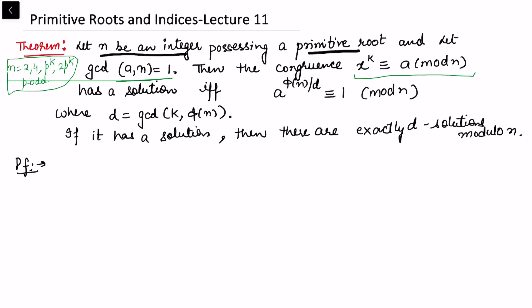Then the congruence x^k ≡ a (mod n) has a solution if and only if a^(φ(n)/d) ≡ 1 (mod n) is satisfied. This condition is if and only if, giving us necessary and sufficient criteria, where d is gcd(k, φ(n)). If a solution exists, there are exactly d solutions modulo n.